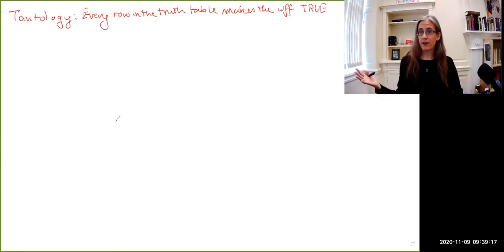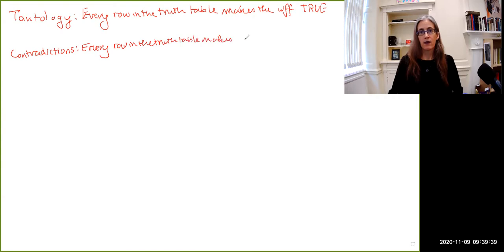Now the flip side of this is the sort of sentence where no matter what truth values you give the atoms it always turns out false. So these are the contradictions. Every row in the truth table makes the well-formed formula false.